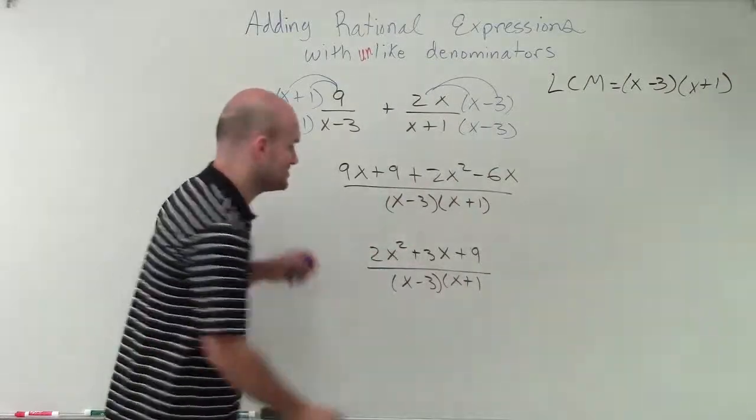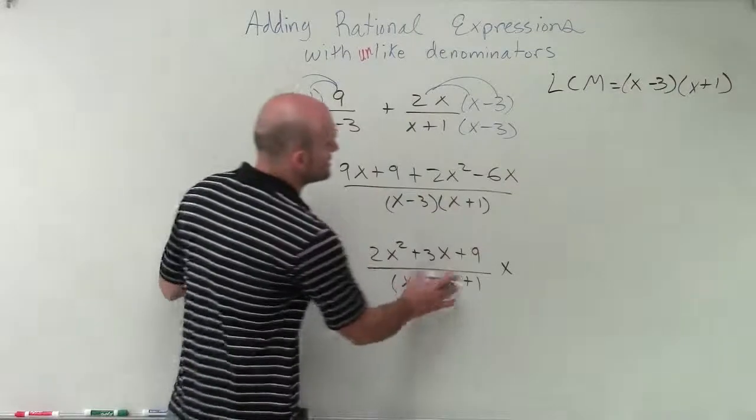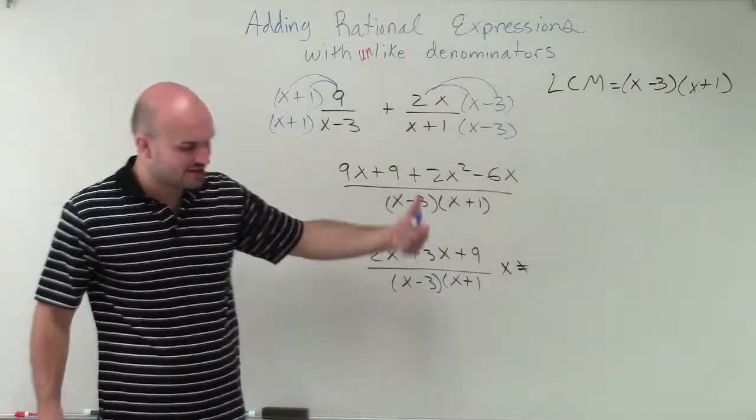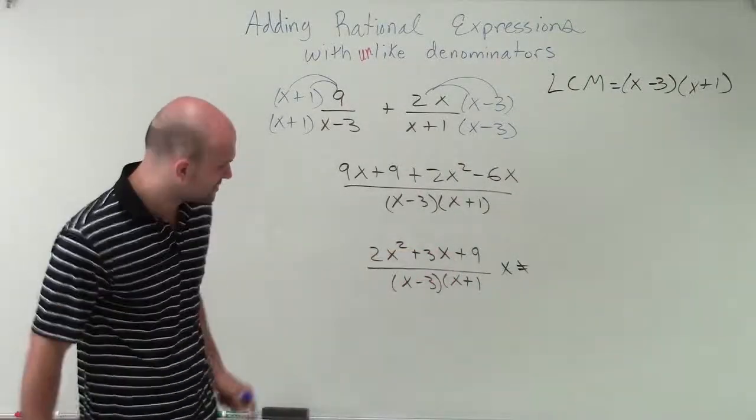So therefore, that's going to be a simplified answer. If we want to add restrictions, remember, our restrictions are what our denominator cannot equal. And remember, our denominator cannot equal 0. So we need to find the values that are going to make our denominator equal 0.